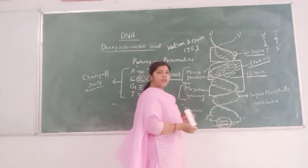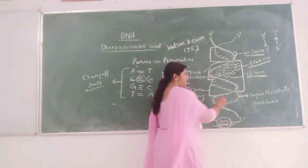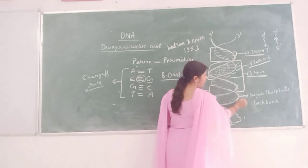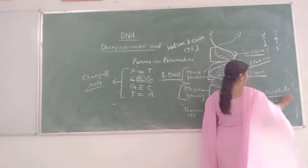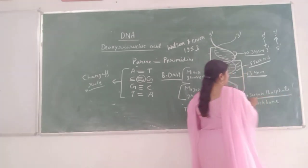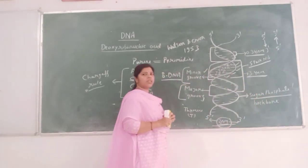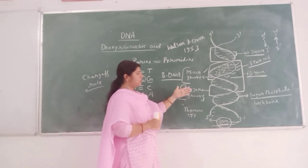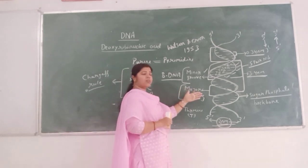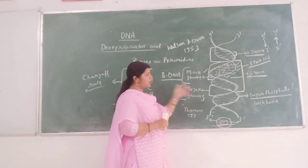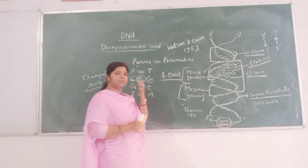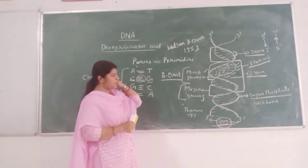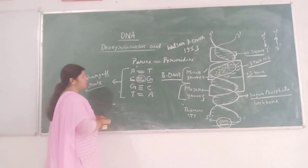These polynucleotide chains are made up of a sugar and phosphate backbone. This is the backbone of the DNA structure, called the polynucleotide chain, which is made up of the sugar and phosphate backbone.